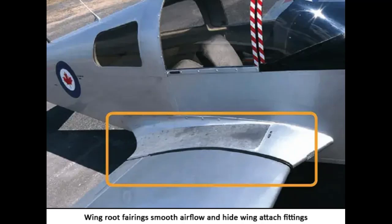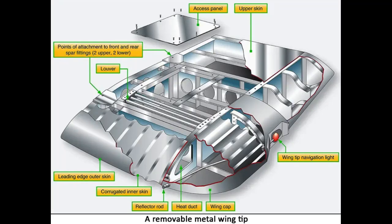The interface between the wing and fuselage is often covered with a fairing to achieve smooth airflow. The fairing can be removed for access to the wing attach fittings. The wing tip is often a removable unit bolted to the outboard end of the wing panel, partly due to the vulnerability of wing tips to damage during ground handling and taxiing. The wing tip assembly is of aluminum alloy construction. The wing tip cap is secured to the tip with countersunk screws and is secured to the interspar structure at four points with one-quarter-inch diameter bolts.